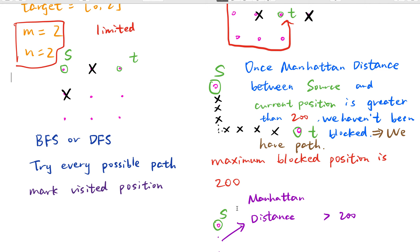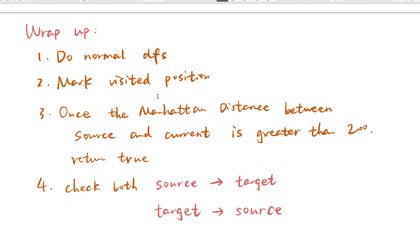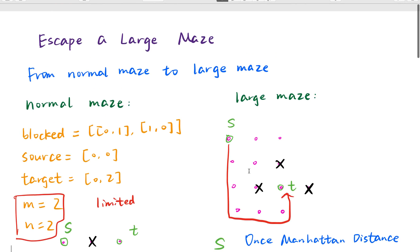We also need to mark all visited positions. To wrap up: we do a normal DFS and mark every visited position. We will not use a 2D array because the index is very large. Instead, we use a hash set and represent each position as a string. Once the Manhattan distance between the source and the current position is greater than 200, we return true. We then run DFS from the target to the source; if both return true, we found a path. Otherwise, we return false. Okay, let's write code.